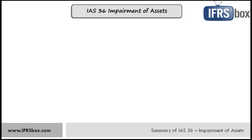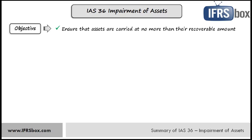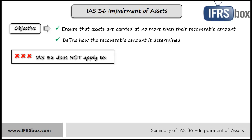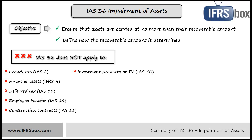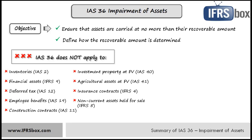Let's go through IAS 36 Impairment of Assets. The objective of IAS 36 is to ensure that assets are carried at no more than their recoverable amount, and to define how recoverable amount is determined. The rules in IAS 36 apply basically to all assets except for inventories — that's IAS 2; financial assets — that's IFRS 9; deferred tax assets — IAS 12; assets arising from employee benefits — that's IAS 19.